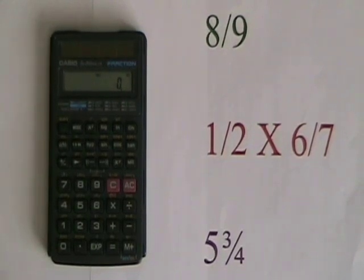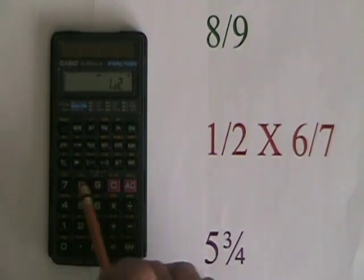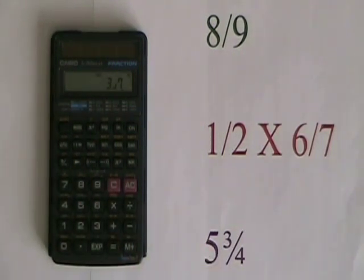Let's do an operation by multiplying 1 half by 6 sevenths. 1, ABC, 2, times 6, ABC, 7, equals 3 sevenths.